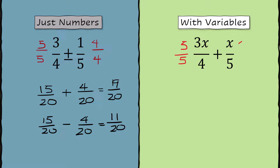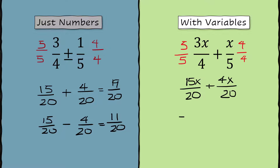When you do this with variables, you do the exact same thing — you need to find a common denominator. With denominators of 4 and 5, multiply each fraction by the other denominator over itself. This time we end up with 15x over 20 plus 4x over 20, and we get 19x over 20.